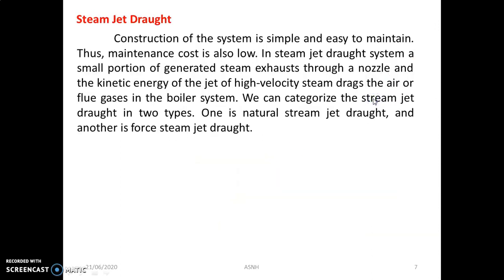The next important type is steam jet draft. It is a very easy technique. In the boiler, steam is produced and that steam is utilized in the combustion chamber for moving the flue gases toward the chimney area. The construction of the system is very simple and easy to maintain, so the maintenance cost is also less. In steam jet draft, a small portion of the generated steam exhausts through a nozzle, and the kinetic energy of that high-velocity steam jet drags the air or flue gases through the boiler system. Steam jet draft is categorized into two types: natural steam jet draft and forced steam jet draft.